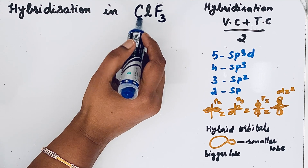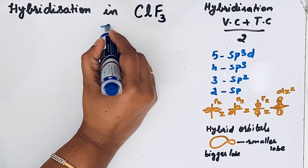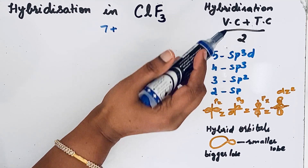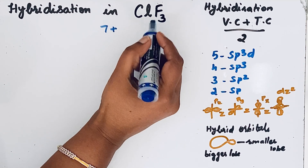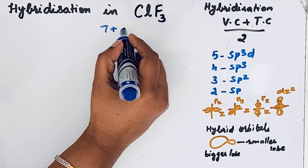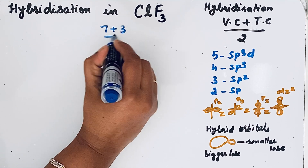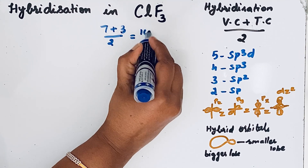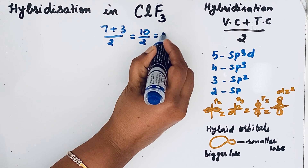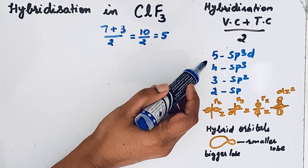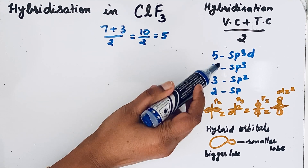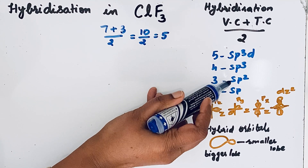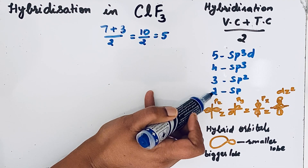In CLF3, chlorine is the central atom. Valence electrons of chlorine = 7, plus total atoms attached to chlorine = 3 fluorine atoms, so (7 + 3) / 2 = 10 / 2 = 5. If the result is 5, that corresponds to sp3d hybridization; 4 = sp3; 3 = sp2; and 2 = sp hybridization.